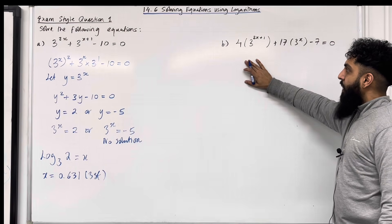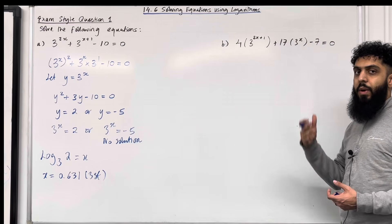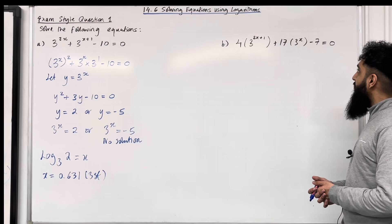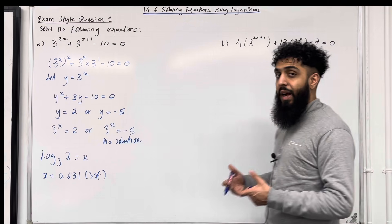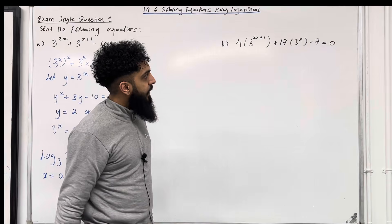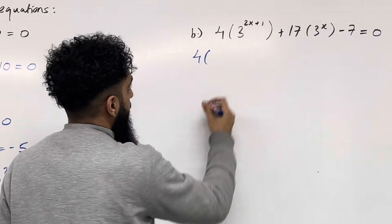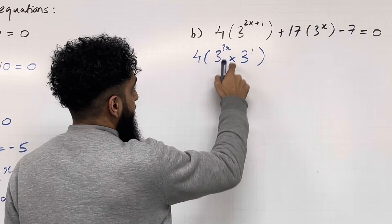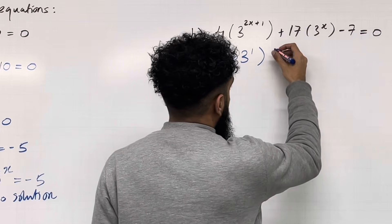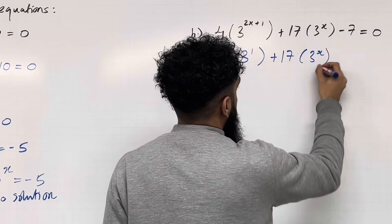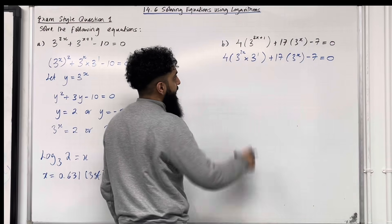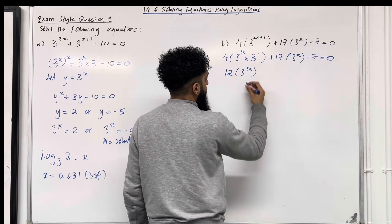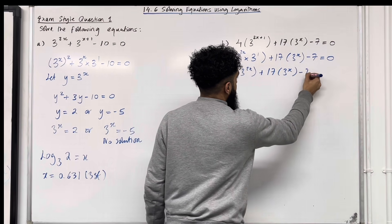Moving on to part b. I want to solve: 4 multiplied by 3 to the power 2x plus 1 in bracket plus 17 multiplied by 3 to the power x in bracket minus 7 equal 0. I'm going to again rewrite this equation in quadratic form using laws of indices. So I've got 4 times 3 to the power 2x multiplied by 3 to the power 1 — using the multiplication rule for laws of indices — plus 17 multiplied by 3 to the power x minus 7 equal 0. 4 multiplied by 3 to the power 1 is 12, so I've got 12 lots of 3 to the power 2x plus 17 lots of 3 to the power x minus 7 equal 0.